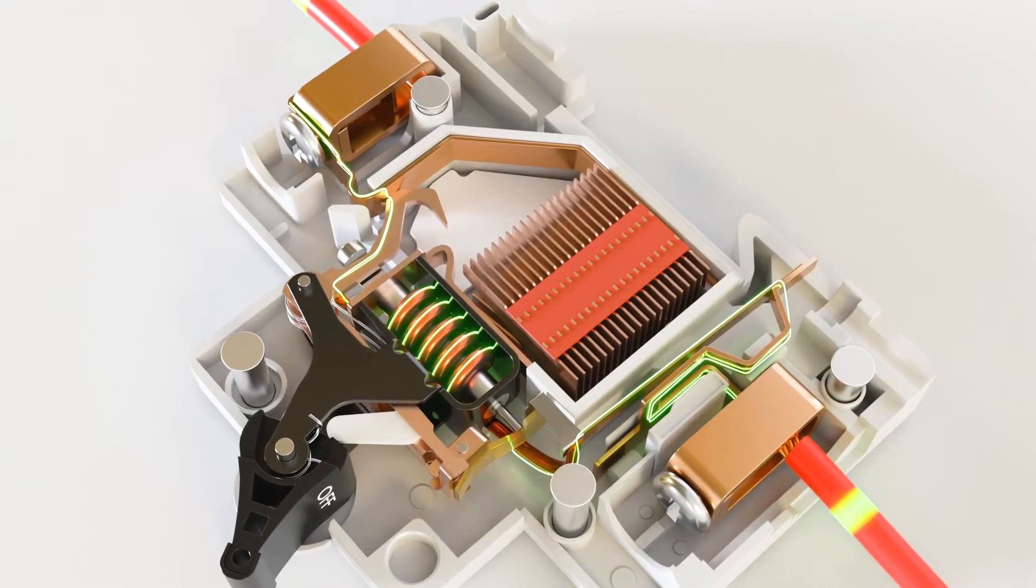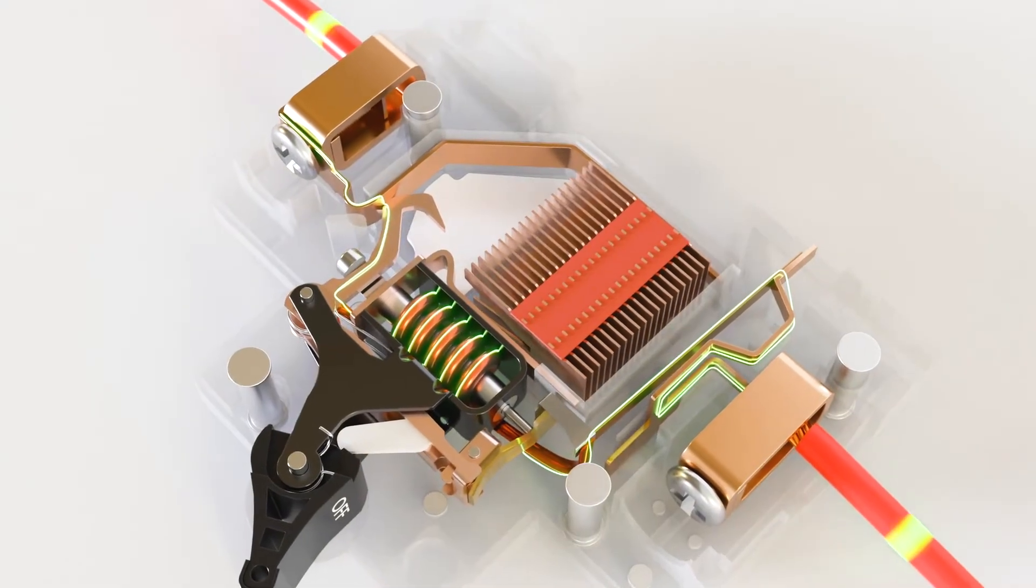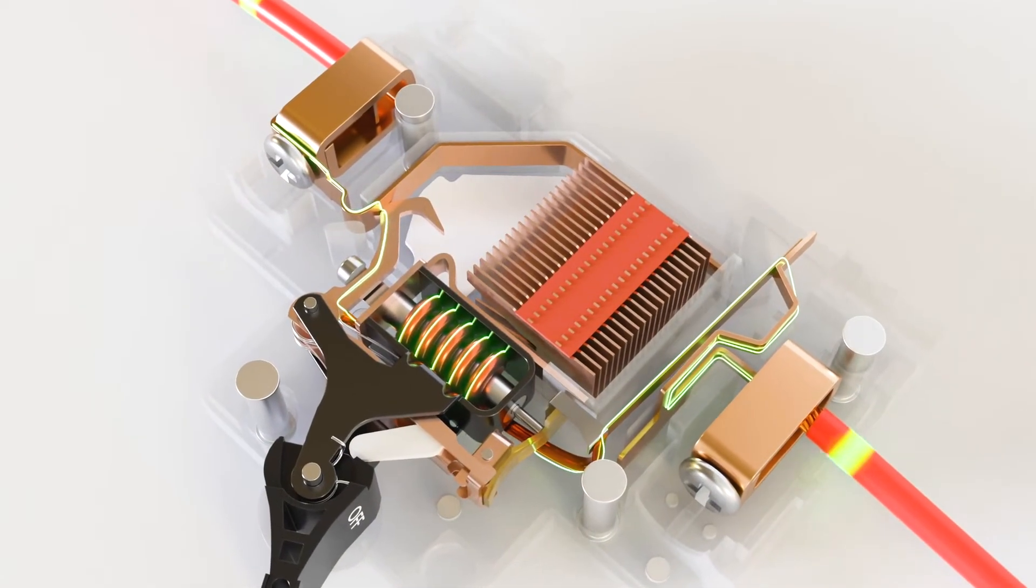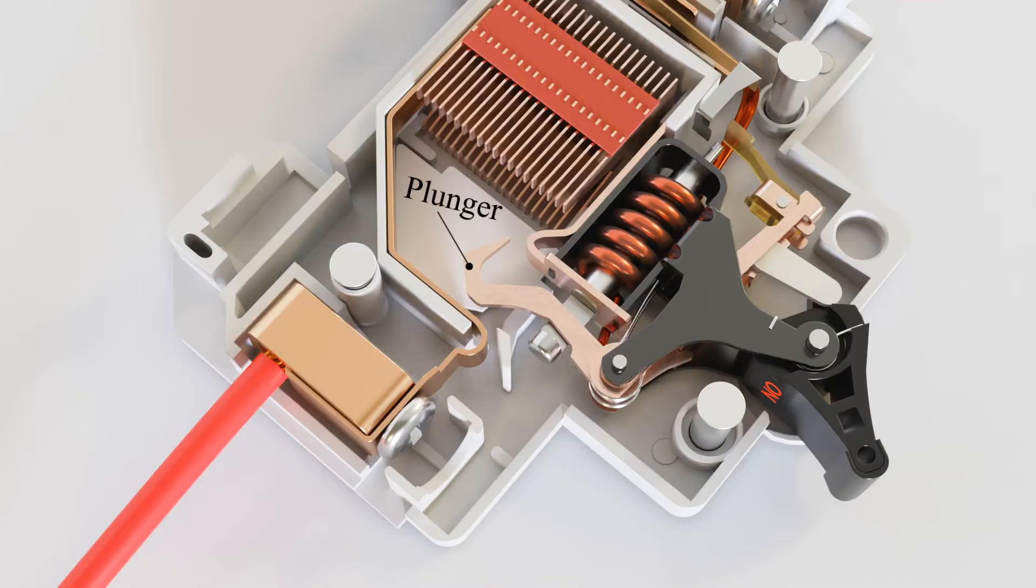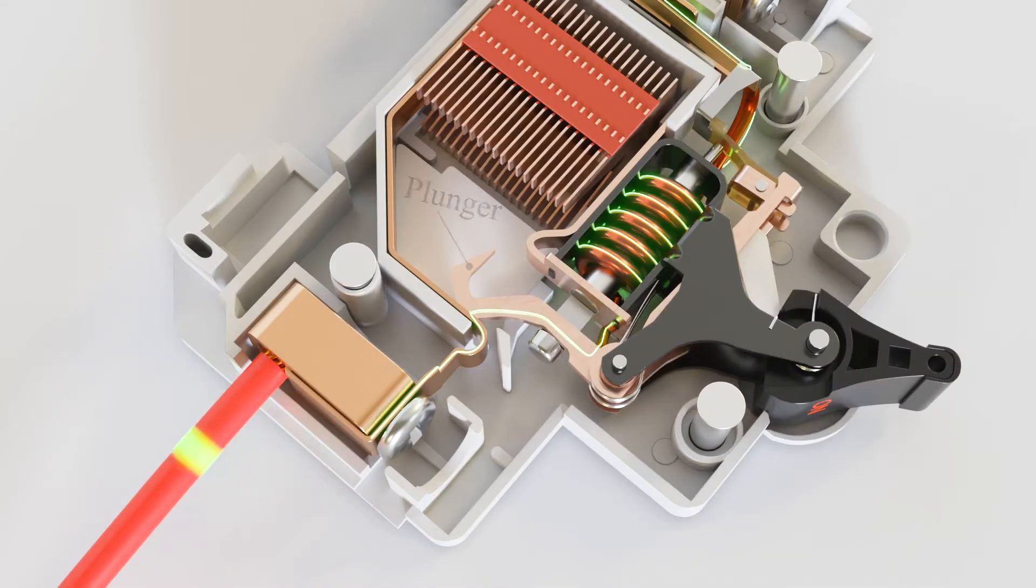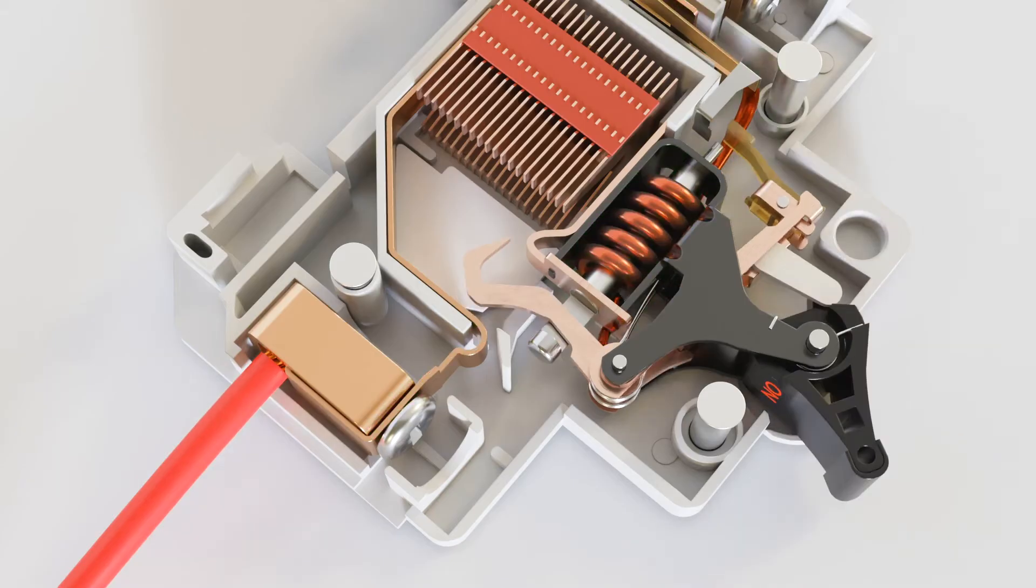In an MCB, load current flows through bimetallic strips and electromagnetic coil. A moving part known as a plunger is responsible for making and breaking the connections between the input and output connectors.